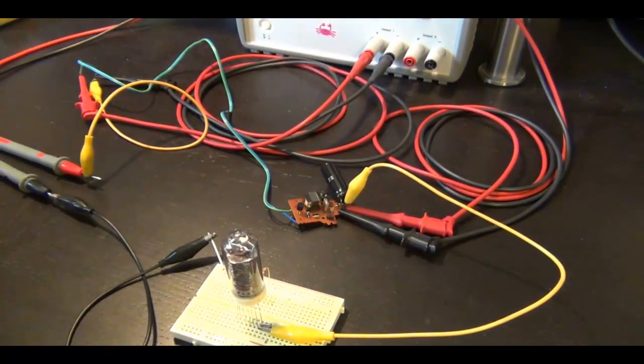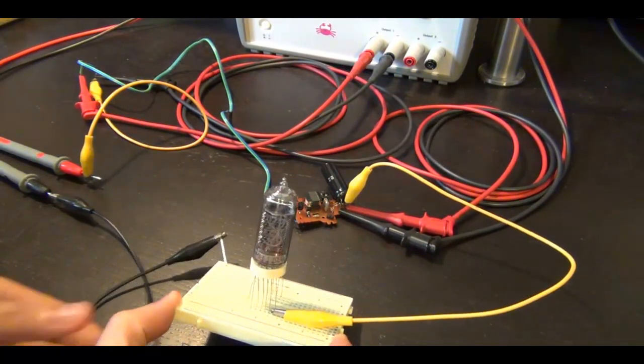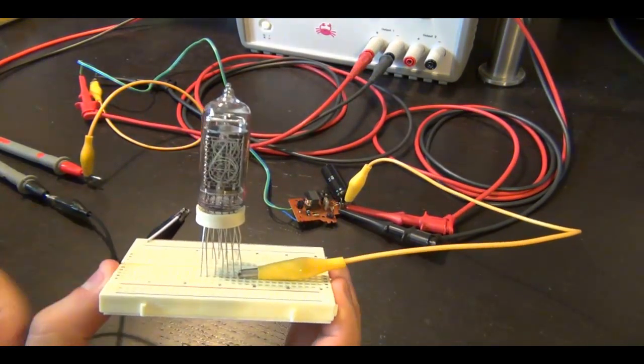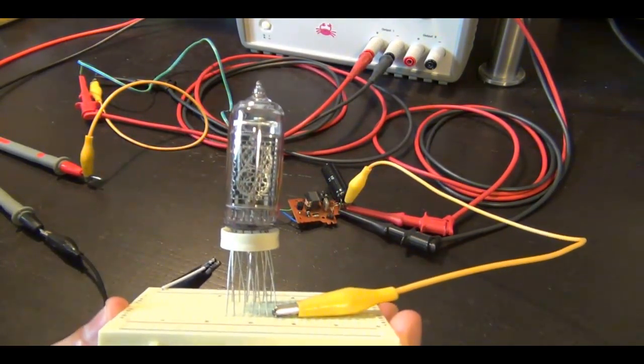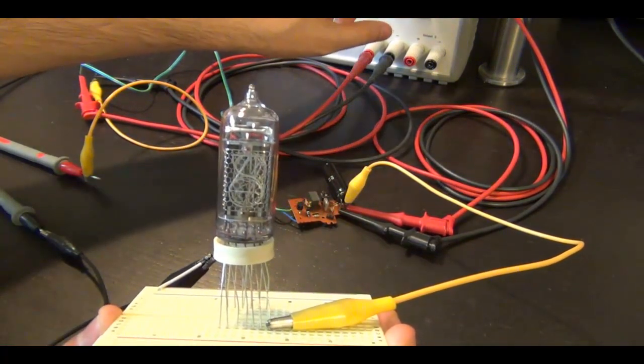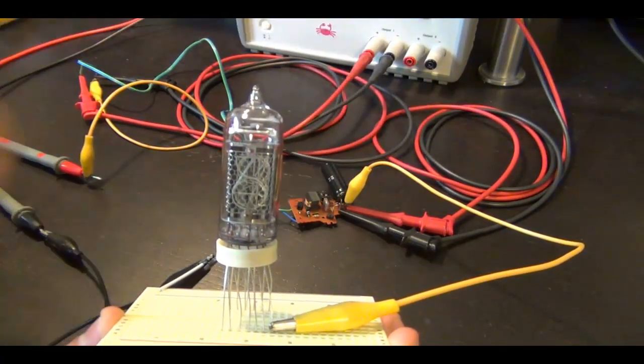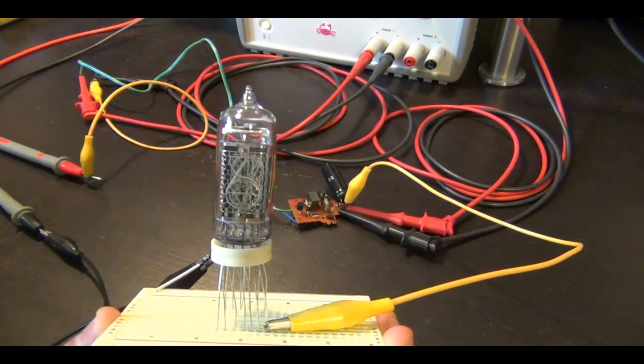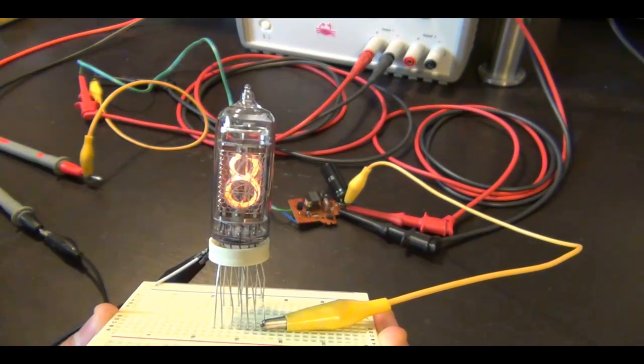So, let me go all the way down. Let me bring the Nixie tube into view, like so. And I'm going to increase the voltage in the power supply until this guy turns on. Here we go. Here we go. There we go. Here it is. And it's showing the number 8.